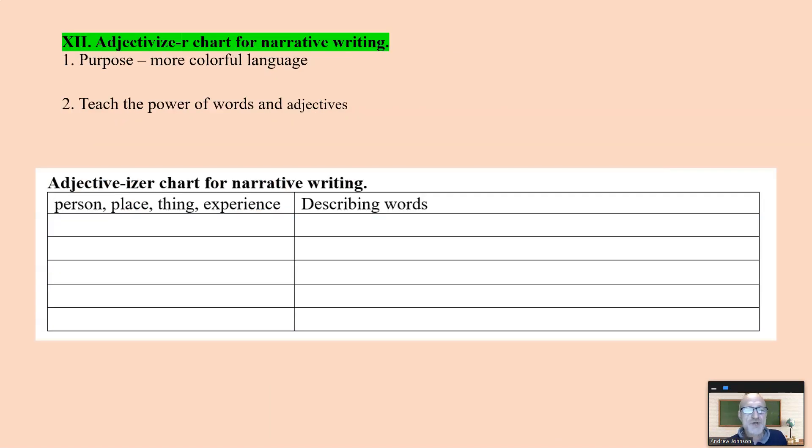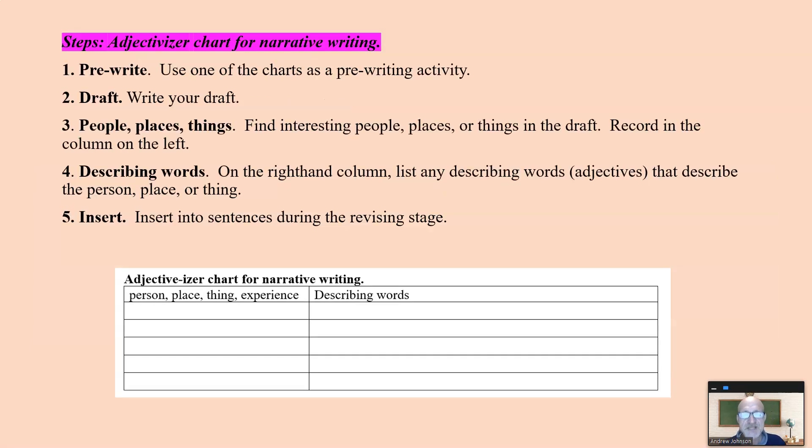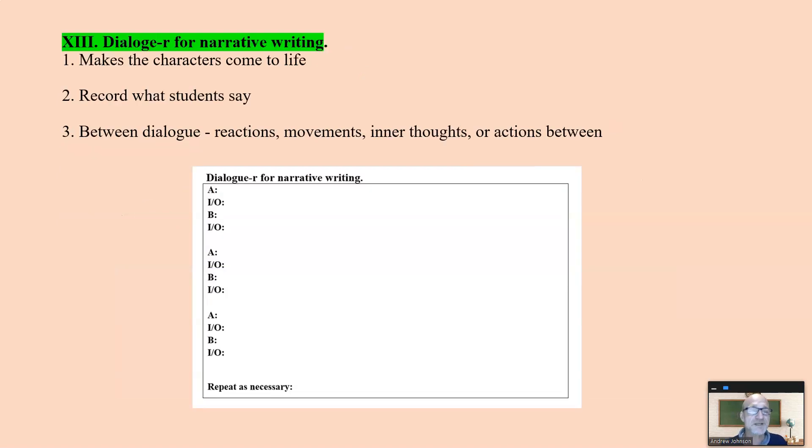The adjectivizer chart to get adjectives, more purposeful, colorful language, and teach the power of words. Here you have the person, the place, the thing, or experience, and you just list a whole bunch of describing words. Remember, ideas beget more ideas to create adjectives for that person, place, thing. We have the draft, then we find the person, place, or things within the draft, have the thing describing words. So this is a strategy to get more describing words into your narrative writing. This could be a personal narrative, biography, whatever it is.